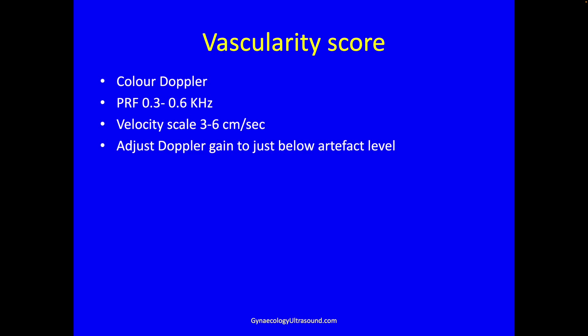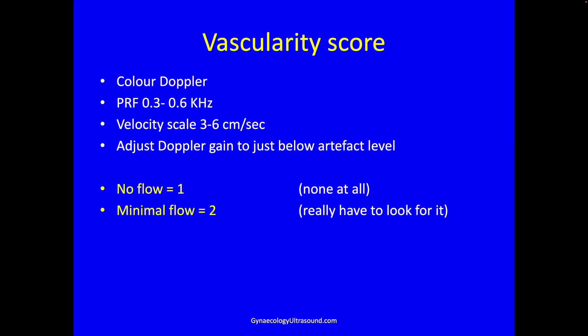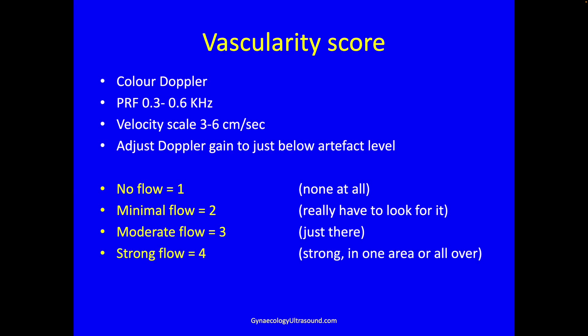Vascularity score: we use color Doppler. I usually start at 0.6 kilohertz and then drop down to 0.3 to make it more sensitive if necessary. At 0.6 you get a velocity scale of three to six centimeters per second, then adjust the Doppler gain to just below artifact level. If you can find no flow even going down to 0.3, that's a color score one. If you really have to look for color but there's a little bit, it's a color score two. If you turn on the box and the flow is just there, that's a three. If there is strong flow either in one area or all over the mass, that is a four.